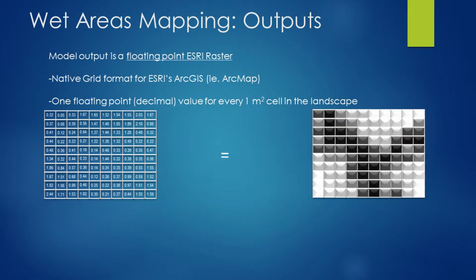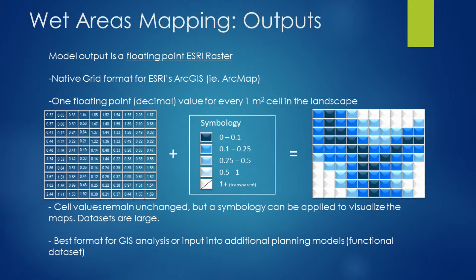Next is the wet areas mapping datasets. There are a couple of different formats. The first is the raw raster — a floating point ESRI raster — where we have one decimal value of predicted water depth for every single one-meter cell across the landscape. When brought into GIS software it shows as shades of gray, so we apply a symbology using shades of blue: 0 to 0.1 meters is a darker blue, ranging up to the 50 centimeters to 1 meter class shown in a lighter shade of blue.